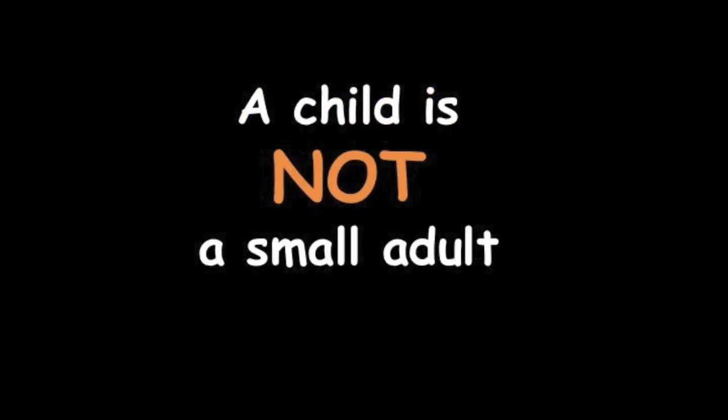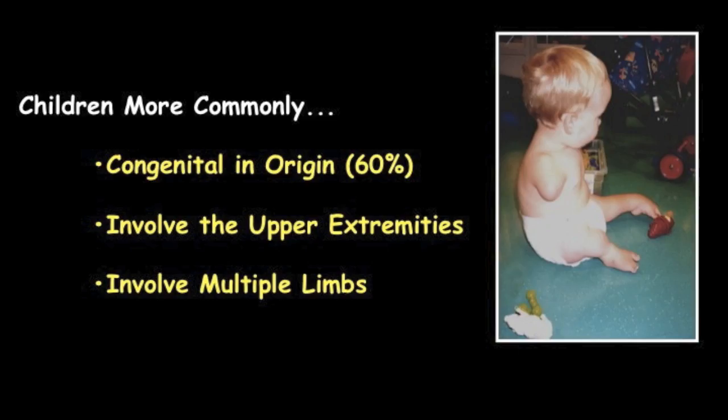The most important thing when managing children for any reason is to recognize that they're not small adults — it's not just a matter of miniaturizing things. Children with limb deficiencies are more likely to be congenital in origin, more likely to involve the upper extremities, and also to involve multiple limbs.